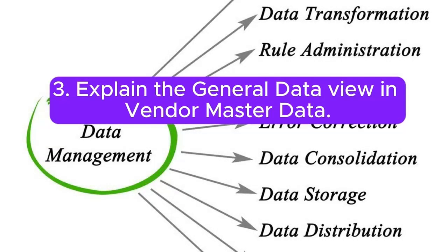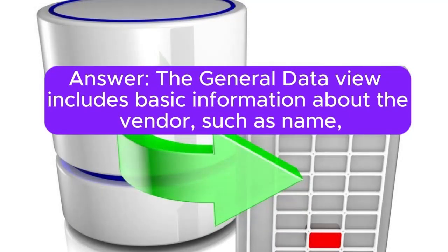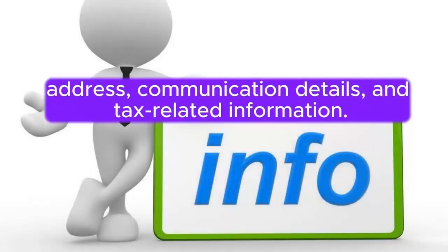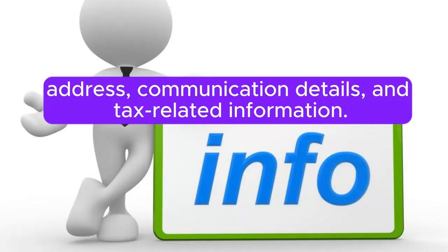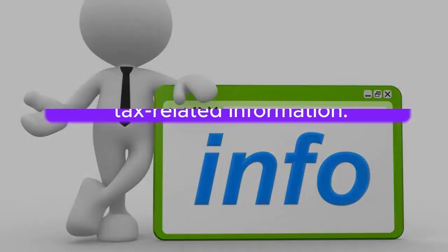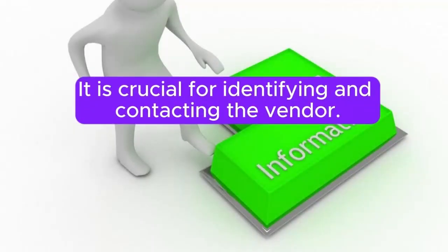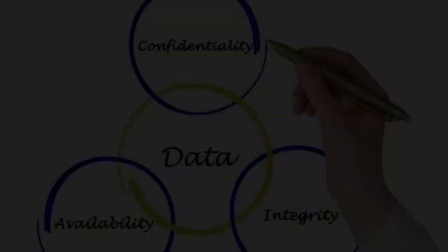3. Explain the general data view in Vendor Master Data. Answer: The general data view includes basic information about the vendor, such as name, address, communication details, and tax-related information. It is crucial for identifying and contacting the vendor.